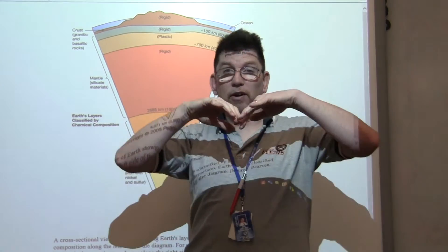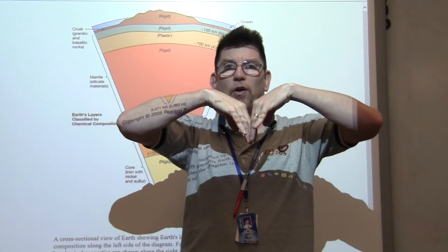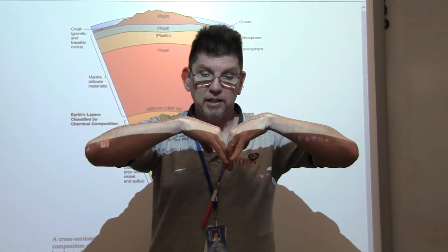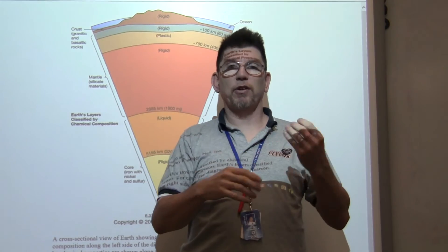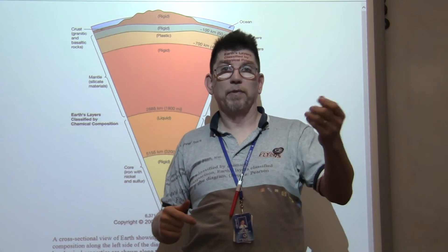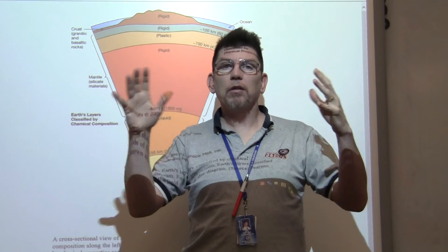This lithosphere is broken into pieces, plates, and that's floating on the next layer, the asthenosphere. The rocks up here have the highest concentration of silicon and oxygen and aluminum. These type of things are lighter.